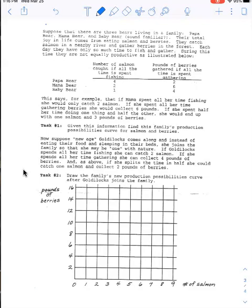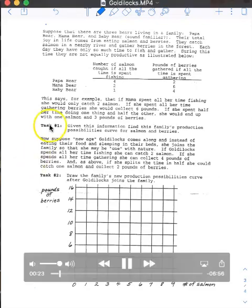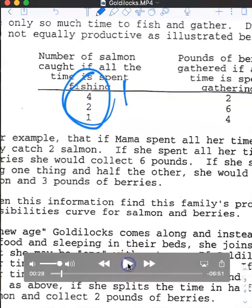So if mama bear spends all her time fishing, she can catch only two salmon in a day. You can see that there. If she spends all of her time gathering berries, she would collect six pounds.